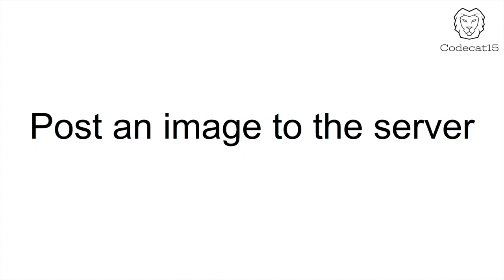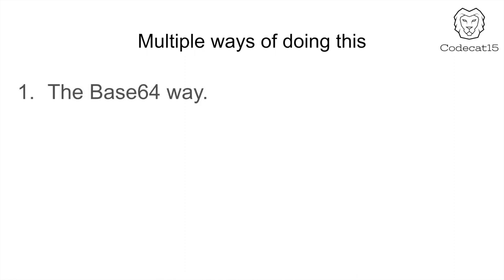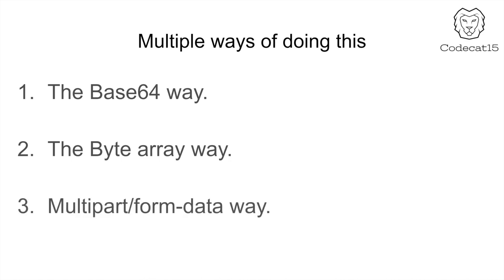In today's session, we are going to learn how you can upload an image to the server, and there are multiple ways of doing this. Number one is by using Base64, the second is by using ByteArray, and the third is by using Multipart Form Data. Multipart form data is very familiar because whenever you search on Google how to upload an image to the server, Stack Overflow and blog links tell you to use multipart form data. But before using multipart form data, it is very important to know what it is — so we are going to discuss about multipart form data in this session.